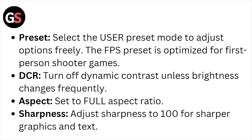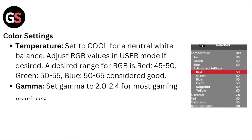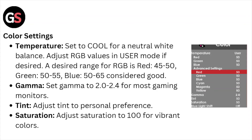DCR: turn off is recommended for dynamic contrast unless brightness changes frequently. Aspect: set to the equal aspect ratio. Sharpness: adjust sharpness to 100 for sharper graphics and text.